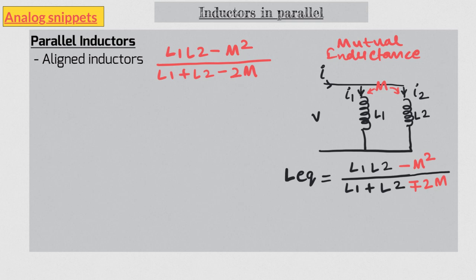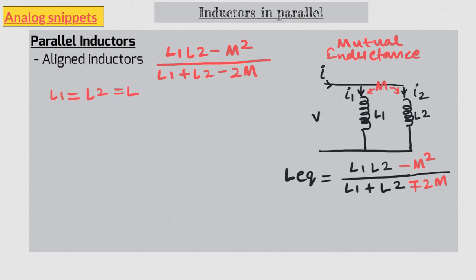Let's first take the case of aligned inductors. When M is 0, this equation reduces to the familiar equation L1·L2 over L1 plus L2. Now we are subtracting M in some form in both numerator and denominator, so at first look it may not be clear if the overall value is increasing or decreasing. Let's make some simplification — let's assume L1 and L2 are equal. In that case, M will always be between 0 and L; M can never exceed L. That is because the least one inductor can couple to the other is no magnetic field (M = 0), or its own entire magnetic field (M = L). For M to exceed L you would need to couple more magnetic field than you can generate, which is not realistic.